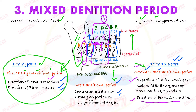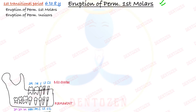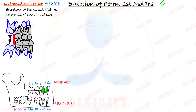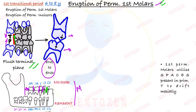In the first period, let's understand the eruption of permanent first molars. They require two things: presence of physiological spaces in the deciduous dentition, and the correct terminal plane relationship. If this terminal plane relationship is a flush terminal plane, these erupting permanent first molars will go straight and end up in an end-to-end molar relationship. To achieve the class 1 molar relationship needed for good occlusion, these molars need to move forward in the mesial direction, utilizing the spaces present in the primary dentition.